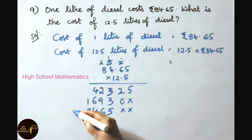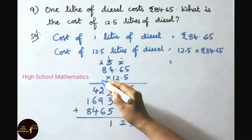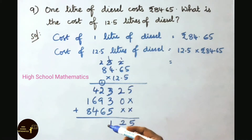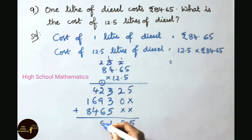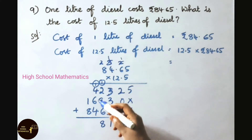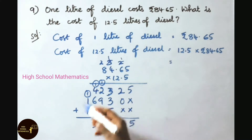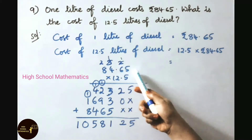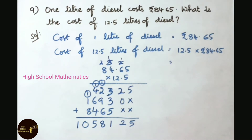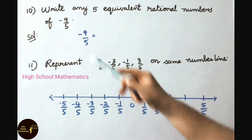Now multiply by 1: 1 five is 5, 1 six is 6, 1 four is 4, 1 eight is 8. Now add all partial products. For the decimal point: 84.65 has 2 decimal digits and 12.5 has 1 decimal digit, so 2 plus 1 equals 3 digits after the decimal in the answer. Therefore, cost of 12.5 liters of diesel is 1058.125 rupees.